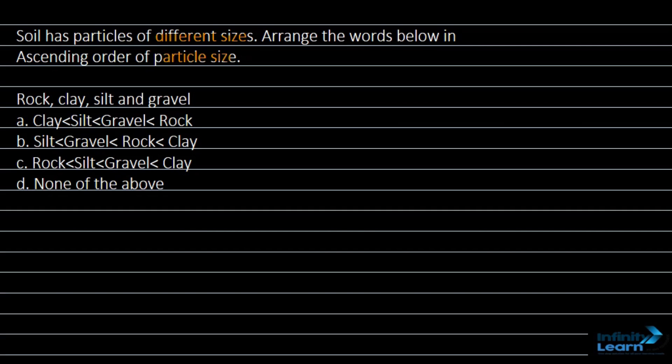Four ascending order arrangements are given and we need to select the right one. A: Clay, silt, gravel, rock. B: Silt, gravel, rock, clay. C: Rock, silt, gravel, clay. D: None of the above.